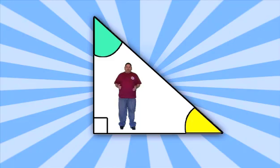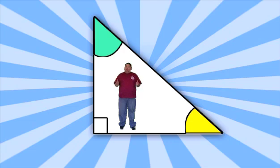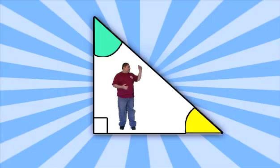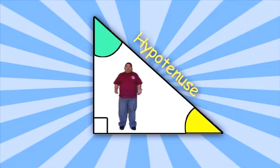Now let's learn something about the sides. A right triangle has one side that is longer than the other two. If you can't tell which side is longest just by looking at your right triangle, try doing this: locate your 90 degree angle and look opposite. This side is the longest side of my right triangle, and this side has a special name.